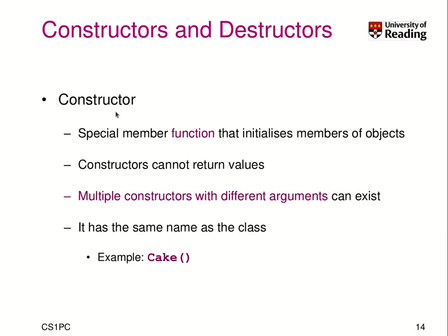So how do these constructors and destructors look like? The constructor is a special member function — we can think about it like a normal function, but it has to have a special name, and it has to have the same name as the class. In our case, we could have a function called cake with brackets. It has no return value, which is actually mandatory.